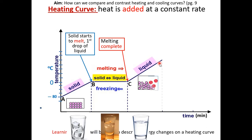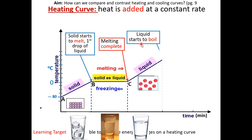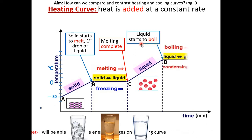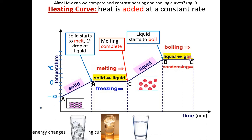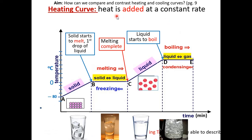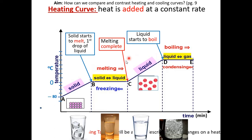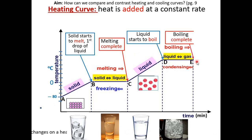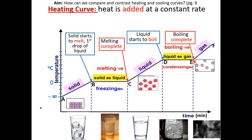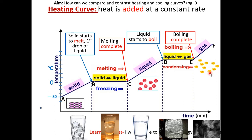As heat is being added at a constant rate, the temperature is rising again — the particles in the liquid phase will move faster. Eventually, the substance in the liquid phase will enter a new phase change known as boiling. During boiling, there are two phases — liquid and gas — that exist at the same time. Heat is still being added at a constant rate during boiling, but the temperature is remaining constant. Just like melting, the energy is being used to break the intermolecular forces. Eventually, the boiling will be complete and your substance will only be in the gas state. Since heat is still being added, the temperature will rise in the last line segment — the particles will move faster and faster.